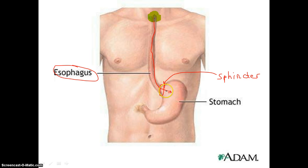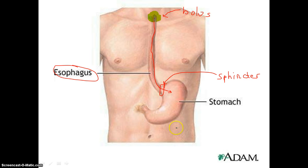If somebody has chronic heartburn, it's probably because all the acid that's in the stomach was able to leak through this sphincter right here and back up into the esophagus, and that hurts — that's pretty painful. The esophagus is not coated with a thick layer of mucus like the stomach is. Our bolus will travel down through the esophagus and eventually enter into our stomach, where it's greeted by a really big bath of hydrochloric acid, which begins to break down some of the food and kills bacteria.